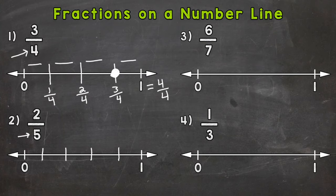So our first mark is one-fifth. Then we have two-fifths, three-fifths, four-fifths, and then five-fifths would be that one whole. So two-fifths would be right here.